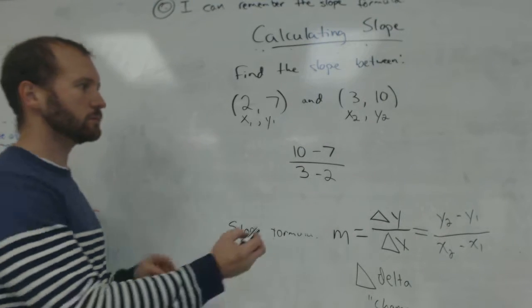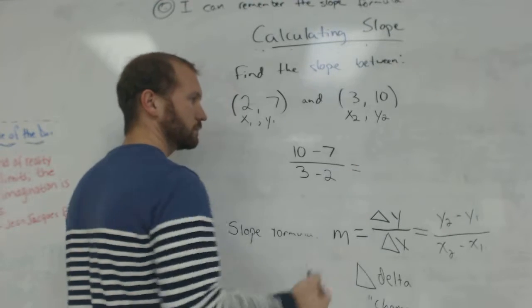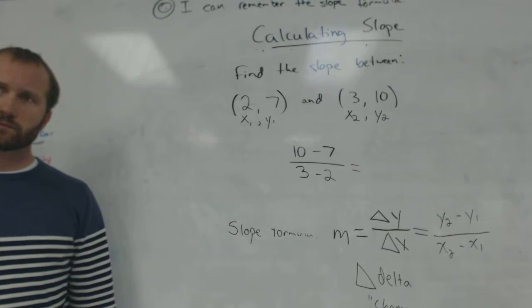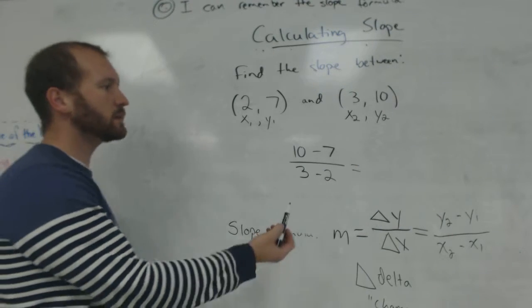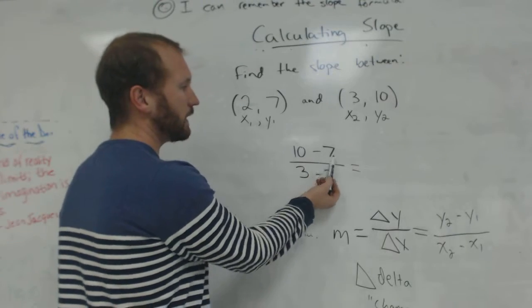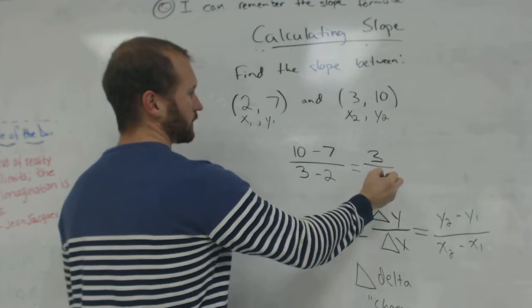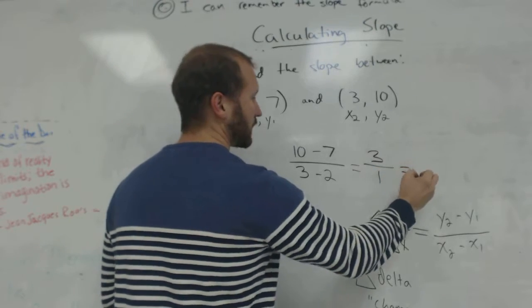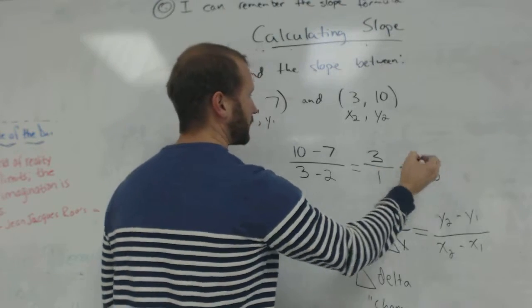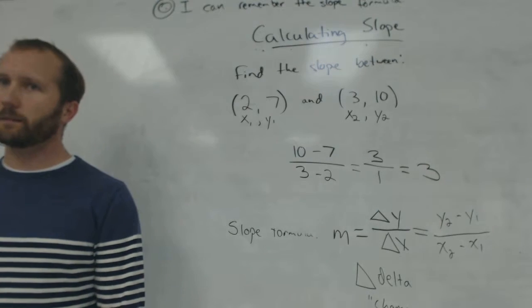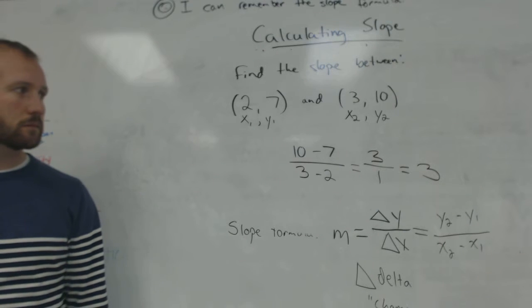On our homework, is it going to be like this? Because I'm understanding this way better than I did with the graphing. Cool. Yeah, this is what you can do on your homework. So 10 minus 7 is 3. 3 minus 2 is 1. What is 3 over 1? 3. Yeah, I'm getting this.